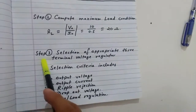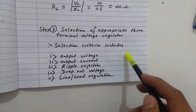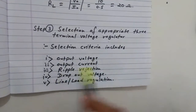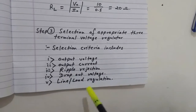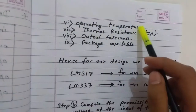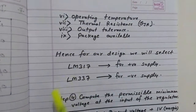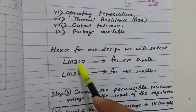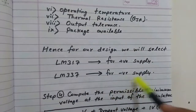The next step is selection of an appropriate three-terminal voltage regulator. The selection criteria include output voltage, output current, ripple rejection, dropout voltage, line regulation, load regulation, operating temperature, thermal resistance, output tolerance, and package availability. For our design we select the LM317 for positive supply and LM337 for negative supply.